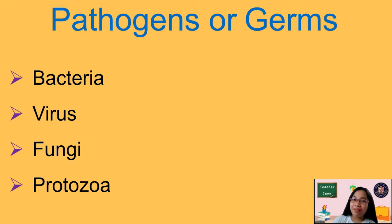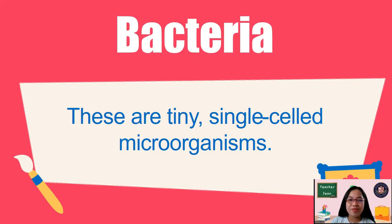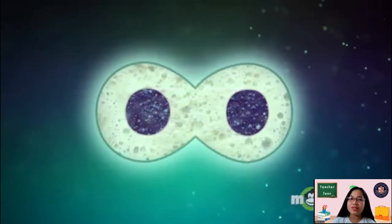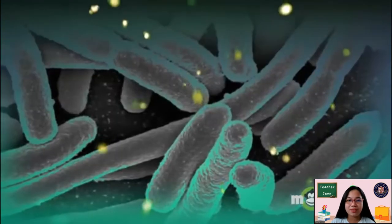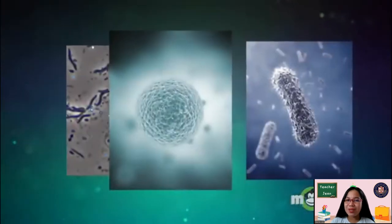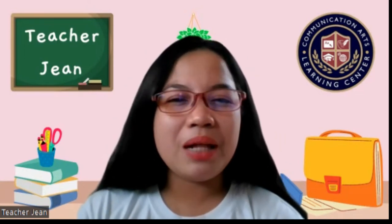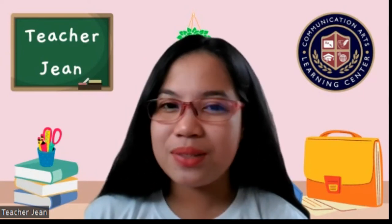The first one is bacteria, then the virus, fungi, and lastly protozoa, which is under parasites. Let's get to know them one by one. Bacteria are tiny single-celled microorganisms. They come in different shapes, including rods, spirals, and spears. Bacteria can grow and multiply in both living and non-living things. If you're using your smartphone right now, before you eat, wash your hands — there might be bacteria there. Not all bacteria are bad. Some bacteria are good, like the bacteria living in your intestines, which help in the digestion or breakdown of the food you eat.